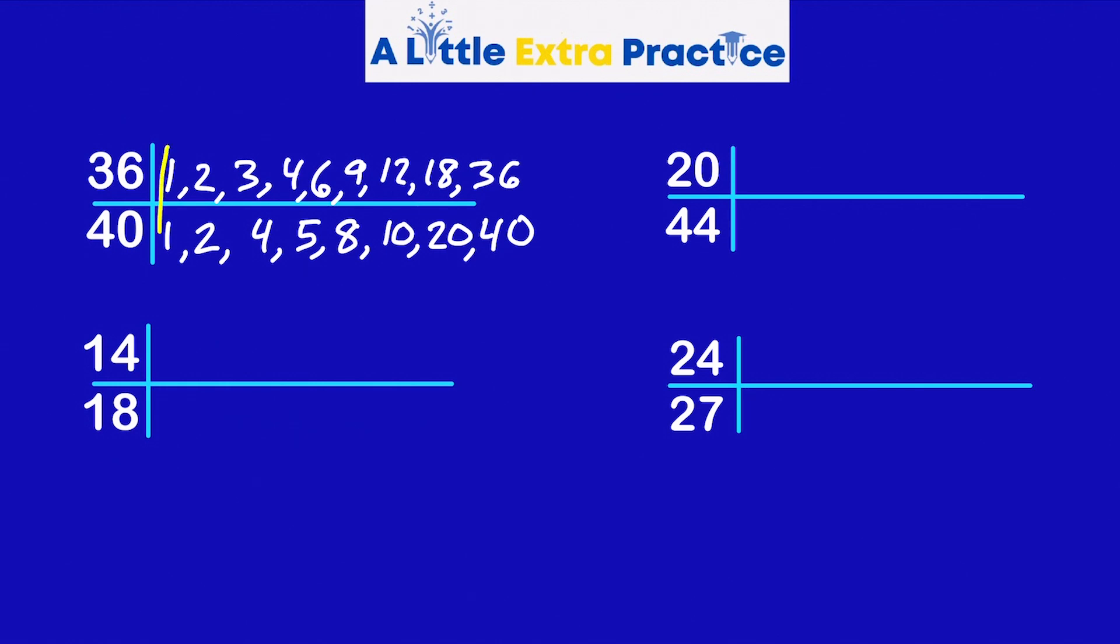What do they share? Common factors: They share a one, a two, a four. Doesn't look like they share anything else. So the GCF is four. 36 divided by four is nine, 40 divided by four is ten. So 36/40 simplifies to nine-tenths.